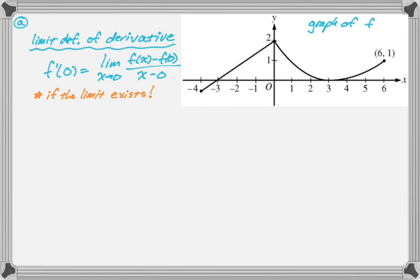You can definitely tell that the function is not differentiable at 0 because there's a sharp turn. But we need to use one-sided limits to justify that. So I'm going to look at the limit as x approaches 0 from the left, and then the limit as x approaches 0 from the right.